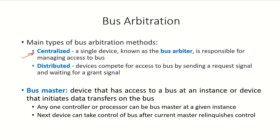The main types of bus arbitration methods include the centralized method, where there is a single device known as the bus arbiter that is responsible for managing access to the bus, or we might have a distributed system where devices compete for access by sending a request signal and waiting for a grant signal, with no single device managing the bus.